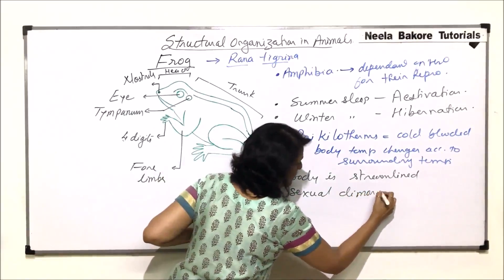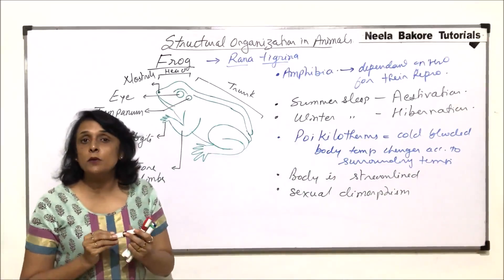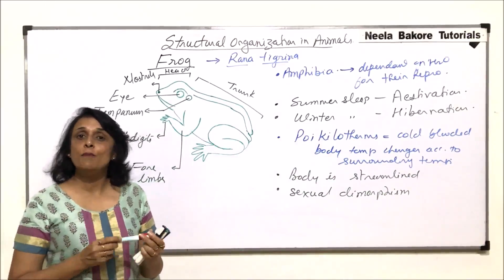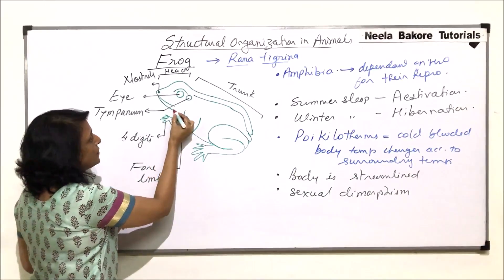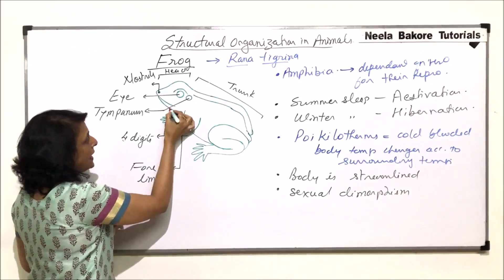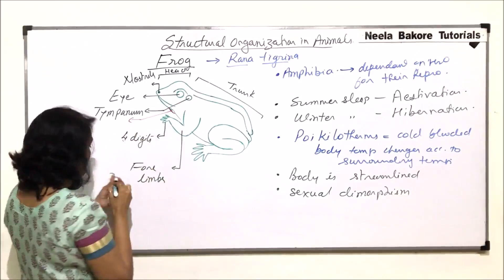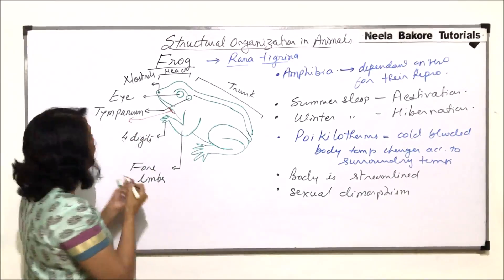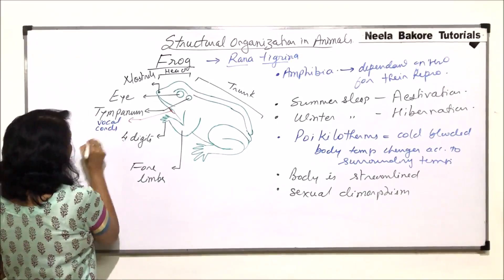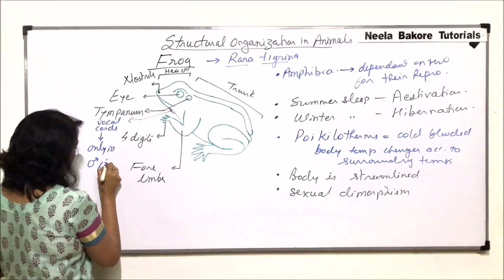Sexual dimorphism. And there are two differences on the basis of which we can distinguish between a male frog and a female frog. In case of male frog, in this region, that is just below the head part where the body starts, in this region we find vocal cords. So vocal cords would be seen only in case of male frogs.